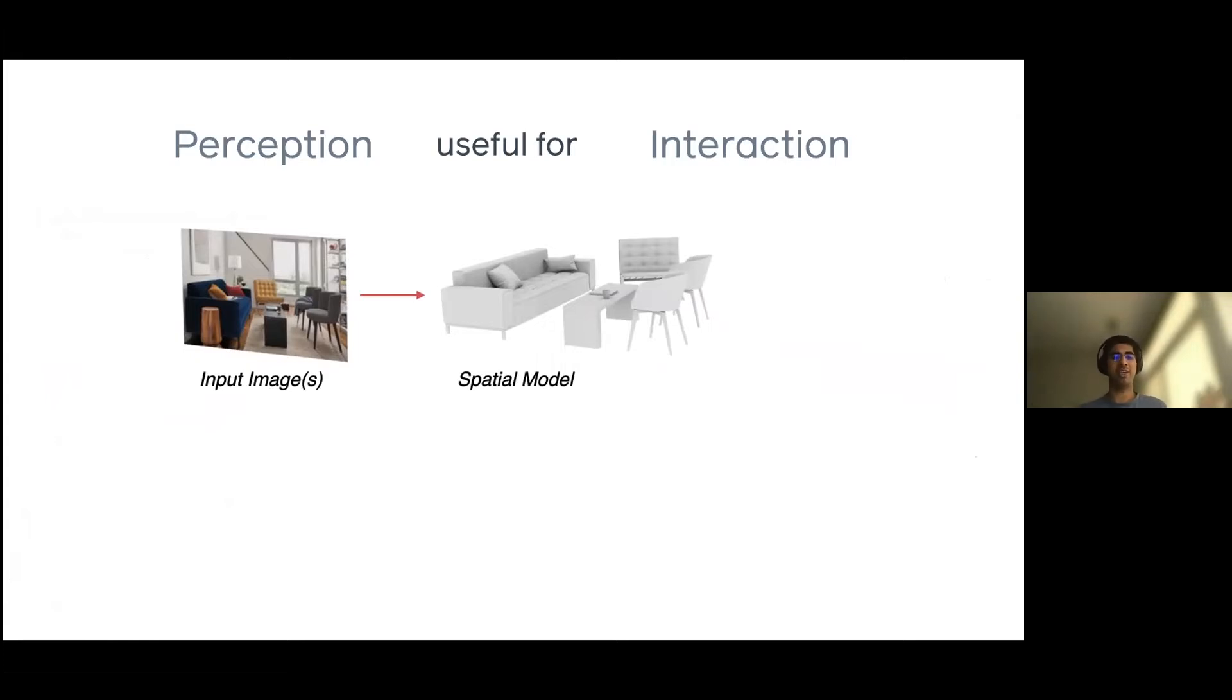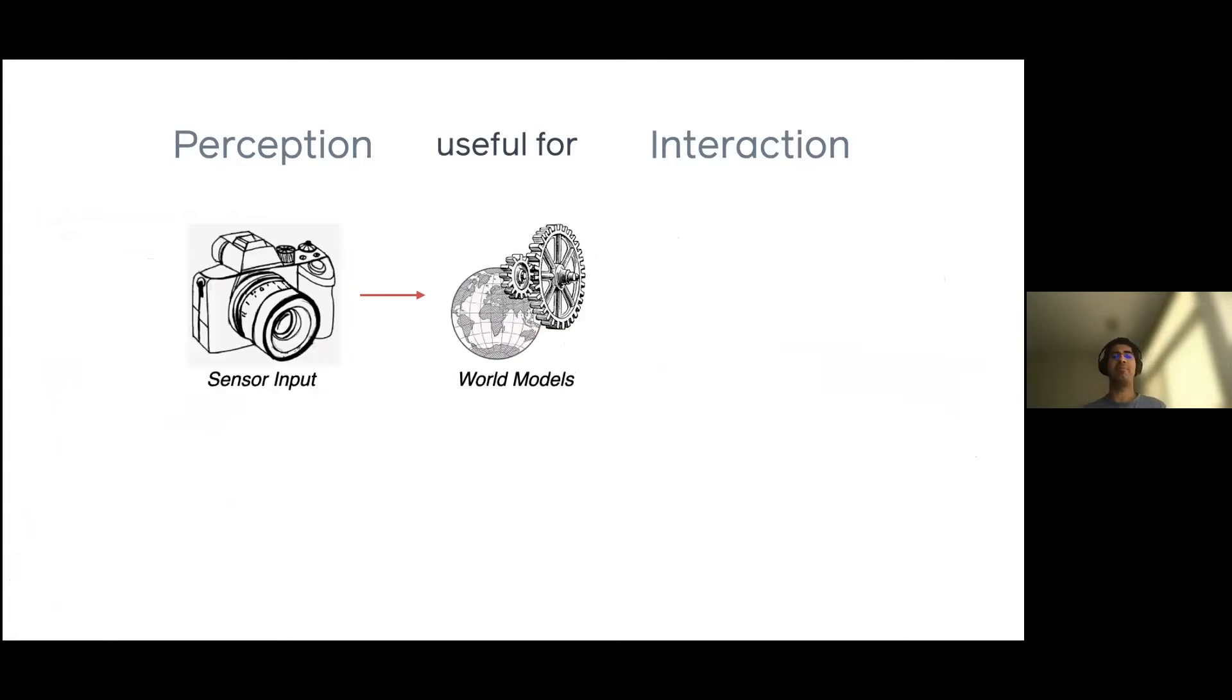And here we're just seeing one example where given an image, we're able to understand the spatial structure of it. But more generally, I'm interested in building some model of the world from perceptual input such as images or videos. And we want this model to tell us both how the world is and also how it might change if, for instance, a robot or a human is acting on it.